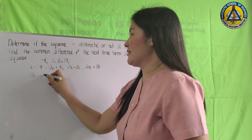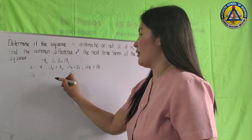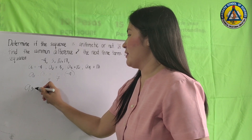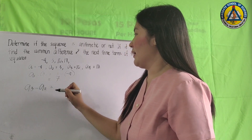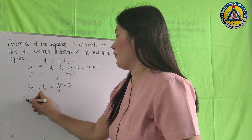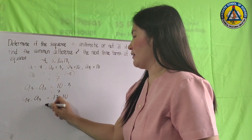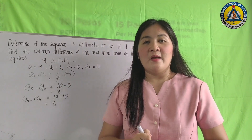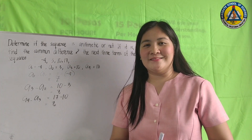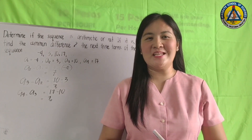a(2) minus a(1) equals 3 minus negative 4, which equals 7. a(3) minus a(2) equals 10 minus 3, which equals 7. Then a(4) minus a(3) equals 17 minus 10, which equals 7. Because there is a common difference of 7 between consecutive terms, the sequence is arithmetic.